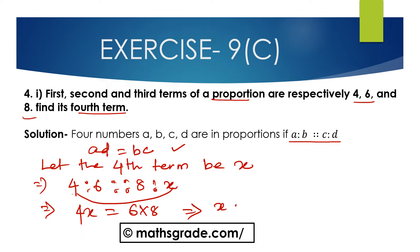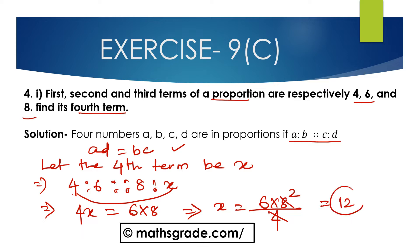Now solving for x: 4 transposes to the right-hand side, so this multiplication changes to division. x equals 6 multiplied by 8 divided by 4. Cancelling 4 and 8 gives 2, and 6 multiplied by 2 is 12. So the fourth term is 12.